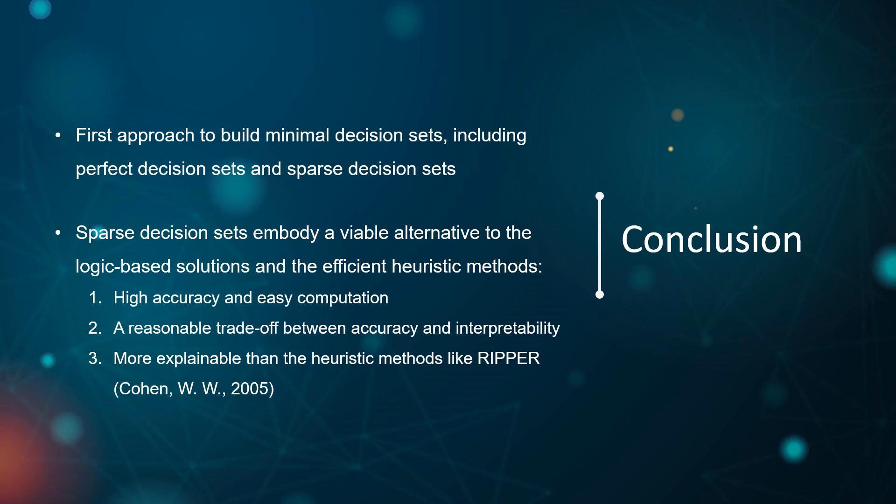To conclude, the paper provides the first approach to build decision sets that directly minimizes the total number of literals required to describe them. The approach computes perfect decision sets that match the training data exactly, or sparse decision sets that trade off accuracy on training data for size. Experiments show that sparse decision sets embody a viable alternative to logic-based solutions and efficient heuristic methods. First, sparse models have high accuracy overall and are much easier to compute. Second, a reasonable trade-off between accuracy and interpretability is considered. Third, the solutions of sparse models are easier to explain compared to other heuristic methods like RIPPER.